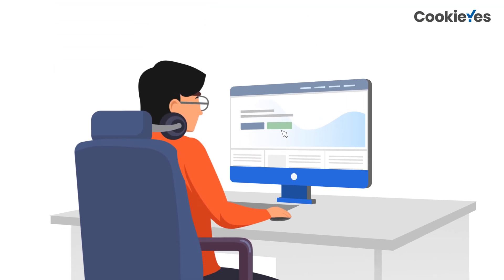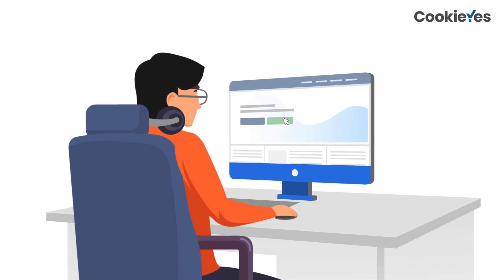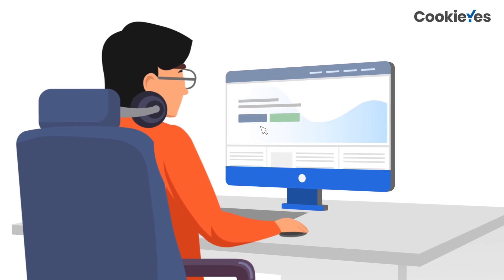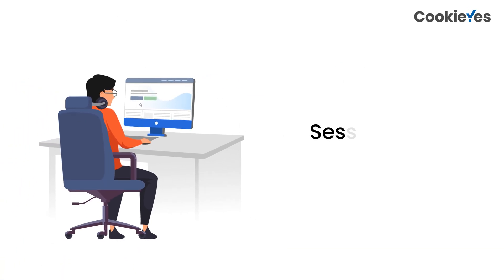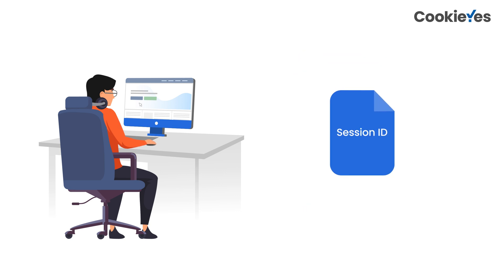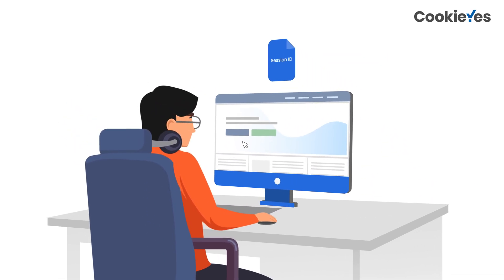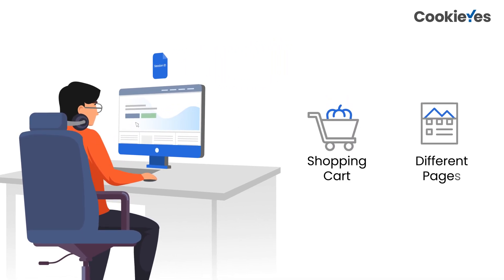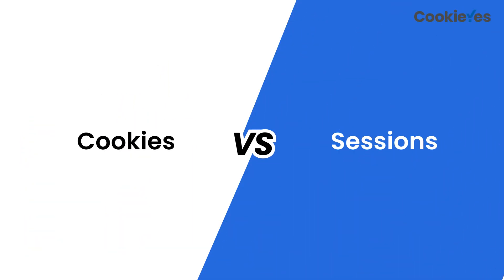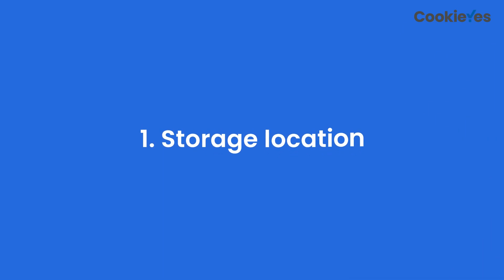On the other hand, a session is a way for websites to remember the user's visit while they are actively browsing. When the user visits a website, an ID for a session is created. The session ID temporarily stores information about the user — for example, items users put in the shopping cart of an online store, or the different pages the user has visited.